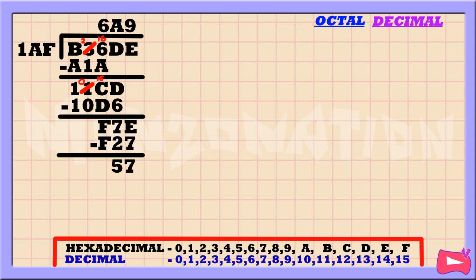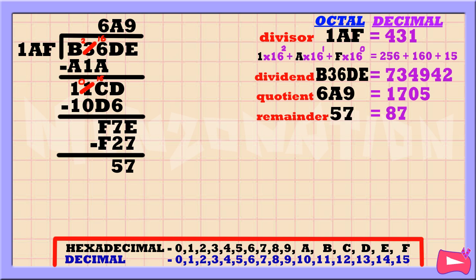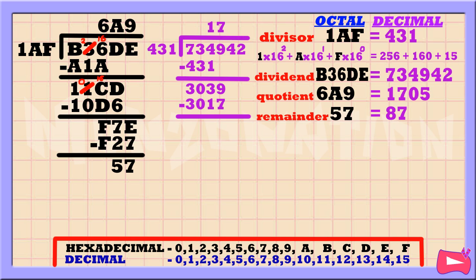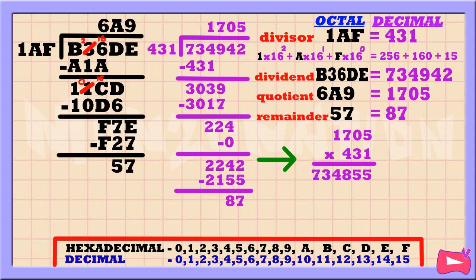If you'd like to confirm your answer, just convert the divisor, dividend, quotient, and remainder into decimal. After getting the decimal equivalent, let's do the same process just like what we did in our hexadecimal division. After dividing, let's do the checking by multiplying the quotient and divisor. 1,705 times 431 is 734,855. Don't forget to add the remainder, and the result is 734,942. As you can see, the result is similar to our dividend, so that means our answer is correct.